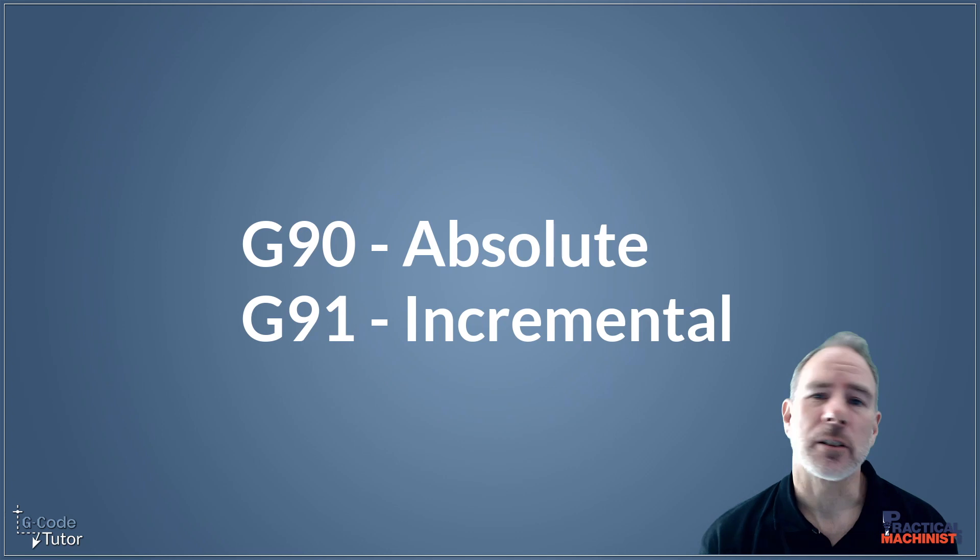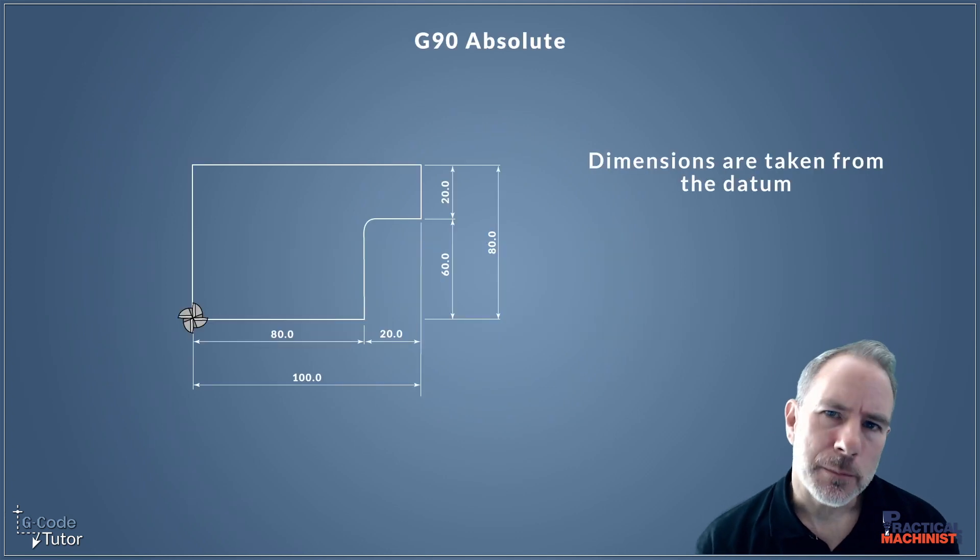Some more very important G-codes that we use on every single program is letting the machine know whether in absolute mode or incremental. For absolute mode we would use G90. What absolute mode means is that all dimensions are taken from the same datum position. So if we have our datum on the bottom left corner, then all our positions would stem from that datum. Every single measurement that we type into G-code all comes from that zero position.